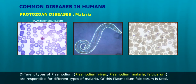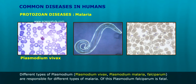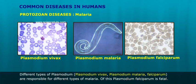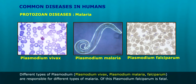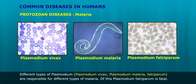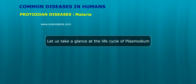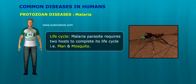Different types of Plasmodium — Plasmodium vivax, Plasmodium malariae, and Plasmodium falciparum — are responsible for different types of malaria. Of these, Plasmodium falciparum is fatal. Let us take a glance at the life cycle of Plasmodium.